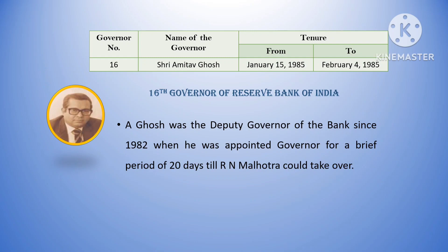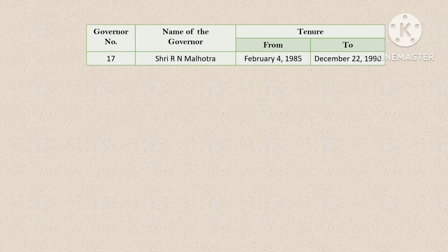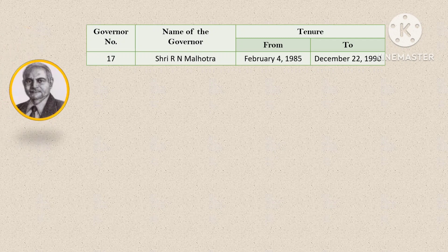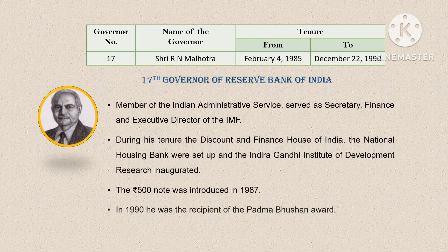The seventeenth governor was R.N. Malhotra. His tenure was from February 4, 1985 till December 22, 1990. He was a member of the Indian Administrative Service. He served as Finance Secretary and was also Executive Director of the IMF. During his tenure, the Discount and Finance House of India, the National Housing Bank were set up, and the Indira Gandhi Institute of Development Research was inaugurated. The Rs.500 note was introduced in 1987. He was awarded the Padma Bhushan in 1990.